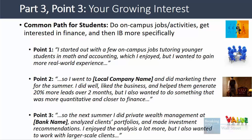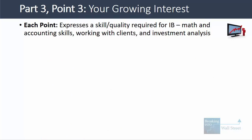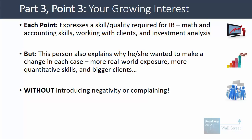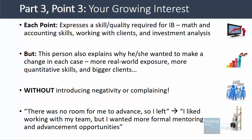You liked the wealth management work, but you also wanted to work with larger-scale clients on actual M&A or financing deals. So in each part, this person expresses a skill or quality required for banking, but also states something he or she wanted to change — like more real-world exposure, more quantitative skills, or bigger clients — and does this without introducing negativity or complaining. Instead of saying 'there was no room for me to advance, so I left,' say 'I liked working with my team, but I wanted more formal mentoring and advancement opportunities.'